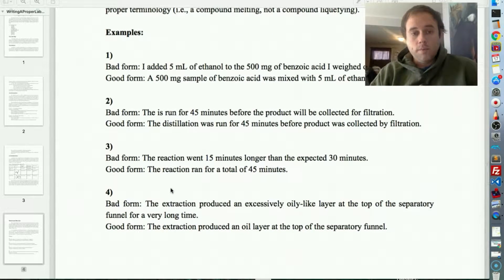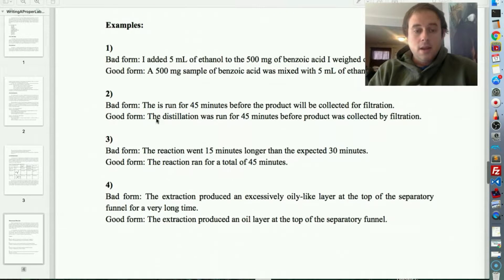Notice it takes out the first person and any of those sort of personalized descriptors. You really are just giving the facts of what happened. So, number two, with bad form, the distillation is run for 45 minutes before the product will be collected for filtration. That's bad form because it's in the present tense or the future tense. Good form is to say the distillation was run for 45 minutes before the product was collected.